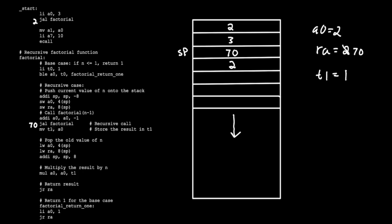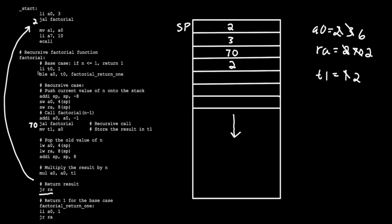We move A0 into T1, so T1 becomes 2. We load into A0 the value at stack pointer with an offset of 4 bytes, so A0 becomes 3. We also load the return address from stack pointer with an offset of 8, which is address 2 — up here. We increment the stack pointer by 8 bytes, then multiply A0 by T1: 3 times 2 is 6. Now we jump and return to the return address, but remember our return address is 2 now. So instead of continuing in this recursive function, we go all the way back to where we originally called the factorial function, and from there we continue with the program.